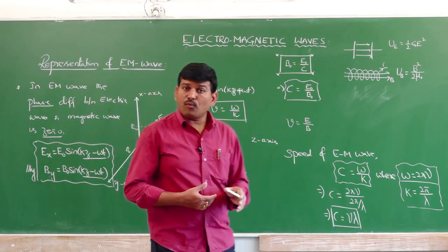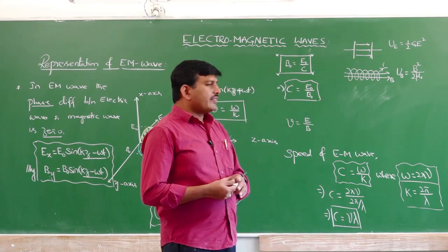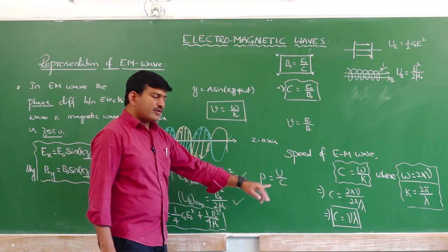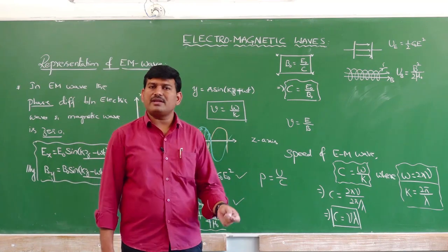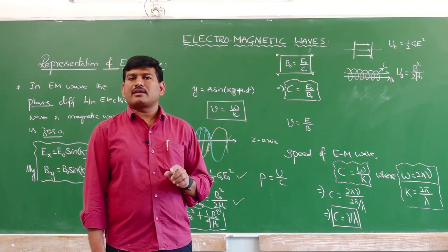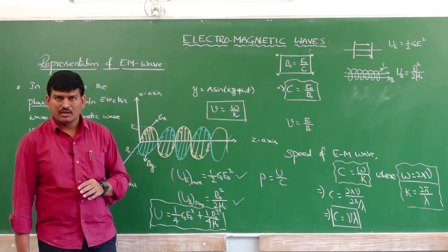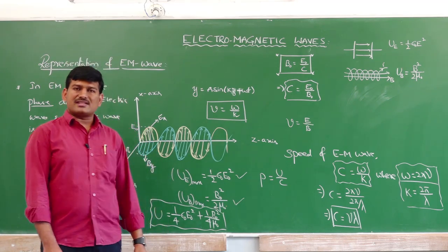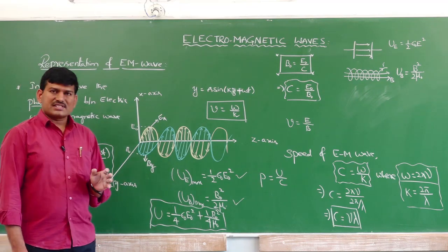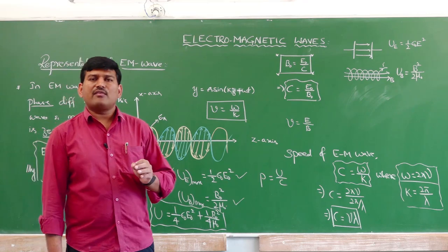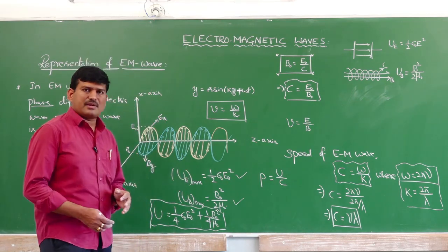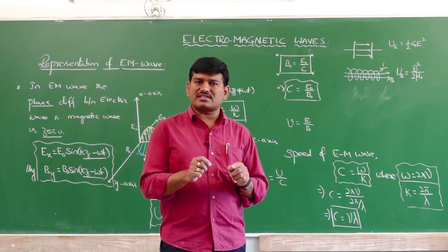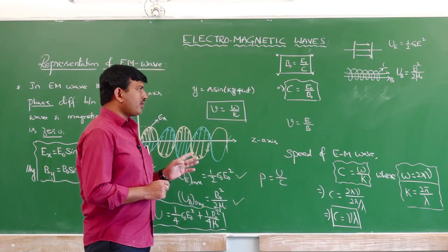An electromagnetic wave carries momentum as well as energy. The momentum associated with an EM wave is p = U/c. Since c is very large, the momentum is very small. Therefore, the radiation pressure exerted on a surface is very small — found to be 7×10⁻⁶ N/m². The force exerted over an area of 10 cm² is about 7×10⁻⁹ N, which is why we cannot experience the force exerted by radiation. The pressure exerted by radiation falling on a given surface is called radiation pressure.